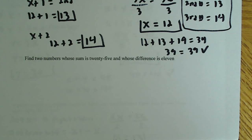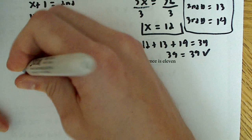Okay, so this one says find two numbers whose sum is 25 and whose difference is 11. So what that says is we have two numbers.